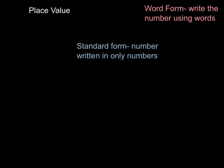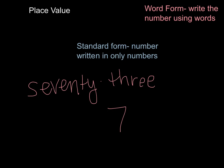The second word we're going to look at is standard form. Standard form is a number that's written only in numbers, so it should be easy. Let me show you an example of that. Let's say our number is 73. In standard form, it would just be the number 7 followed by the 3.